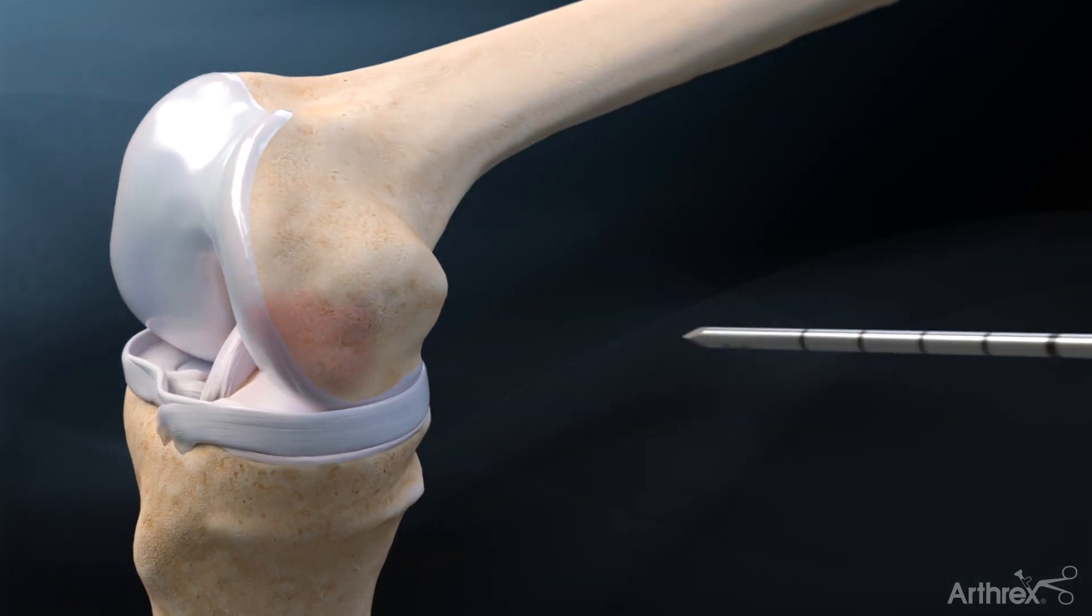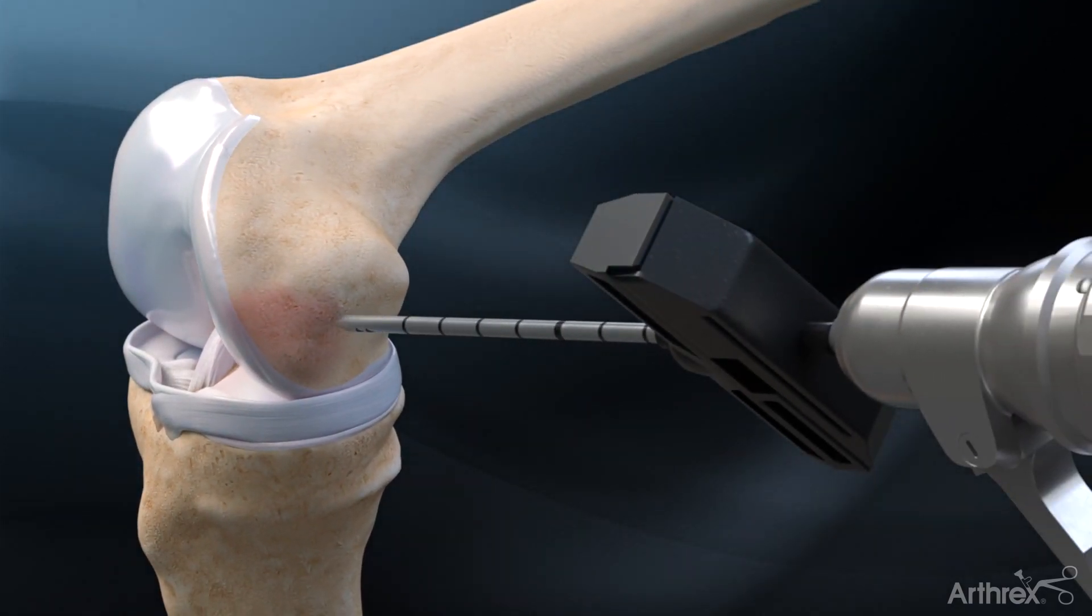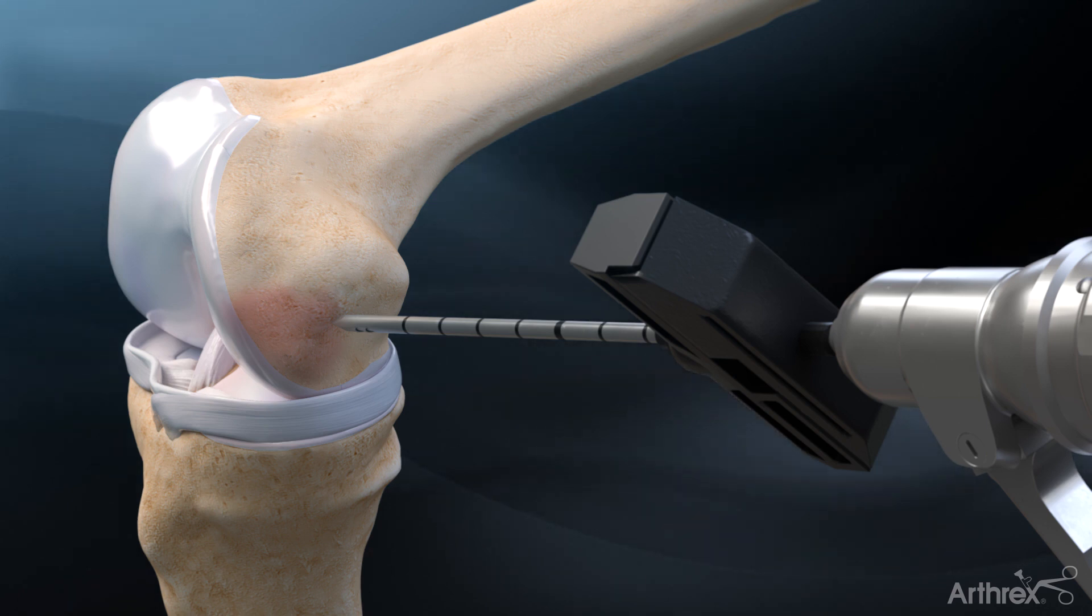First, position either the open tip or closed tip delivery cannula adjacent to the bone marrow lesion according to the MRI.